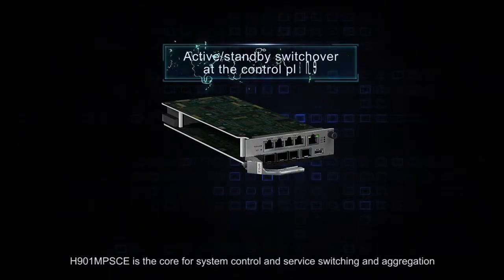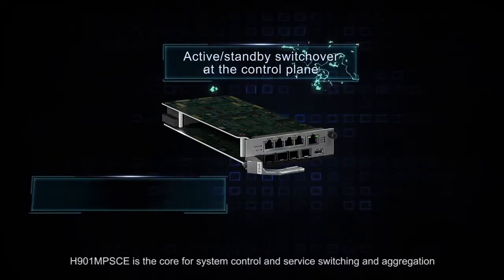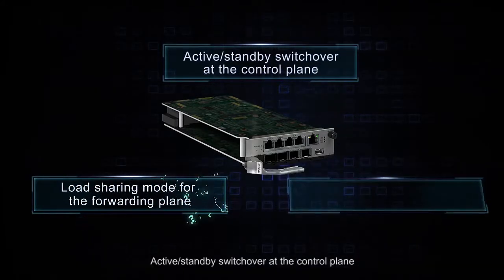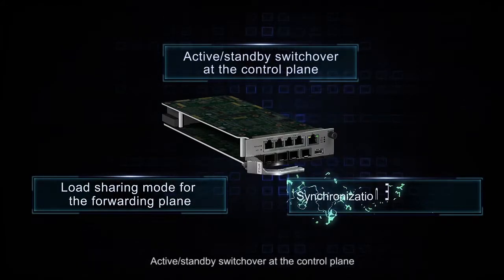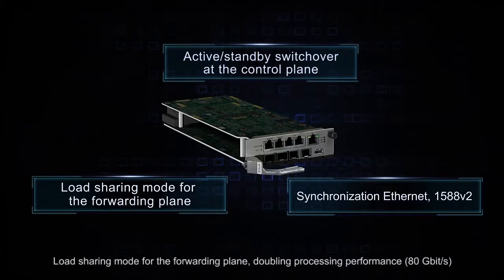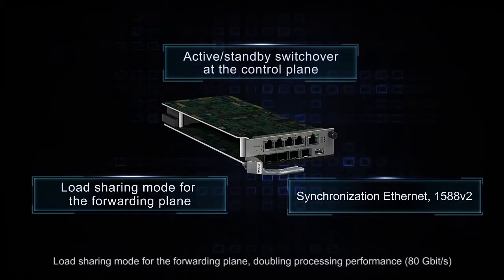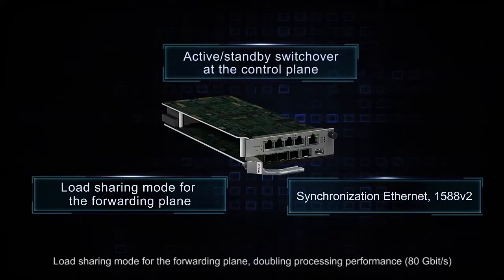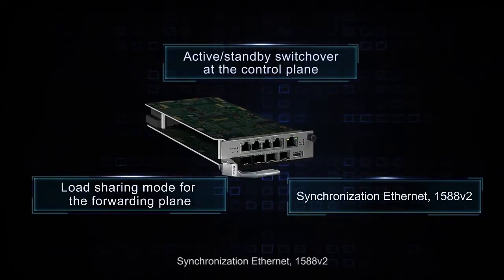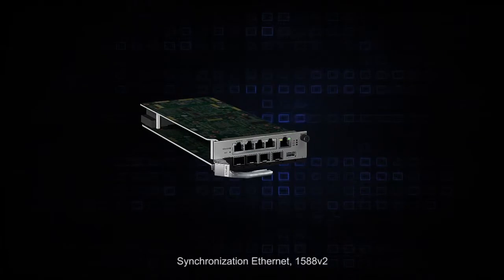H901MPSCE is the core for system control and service switching and aggregation. Active and standby switchover is supported on the control plane, with load sharing mode for the forwarding plane, doubling processing performance to 80 gigabits per second. It also supports Synchronization Ethernet and 1588v2.